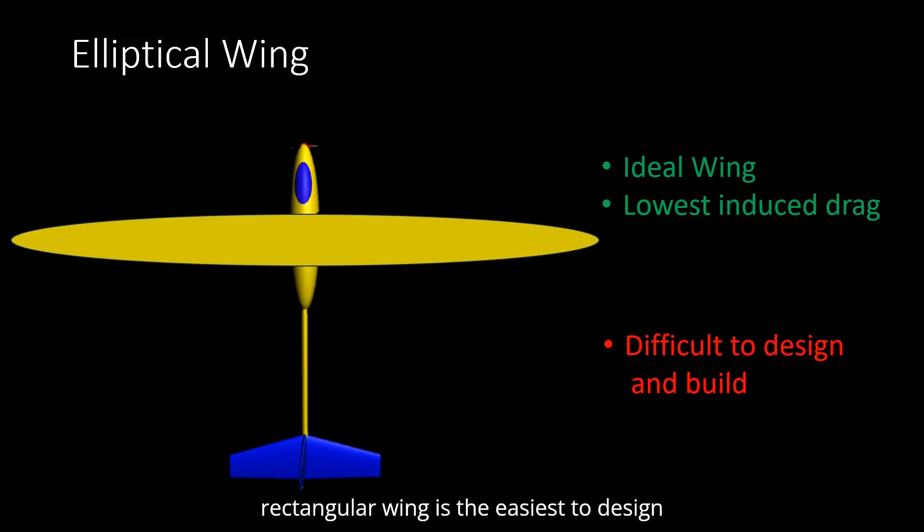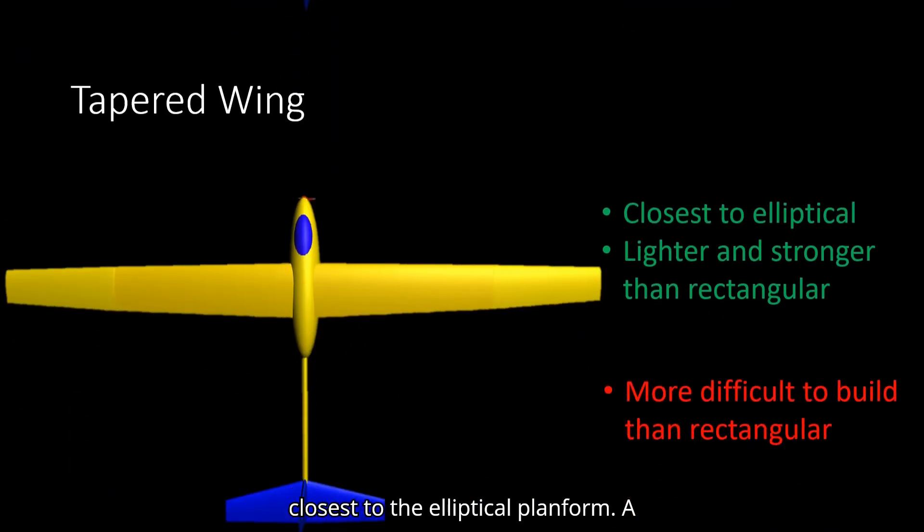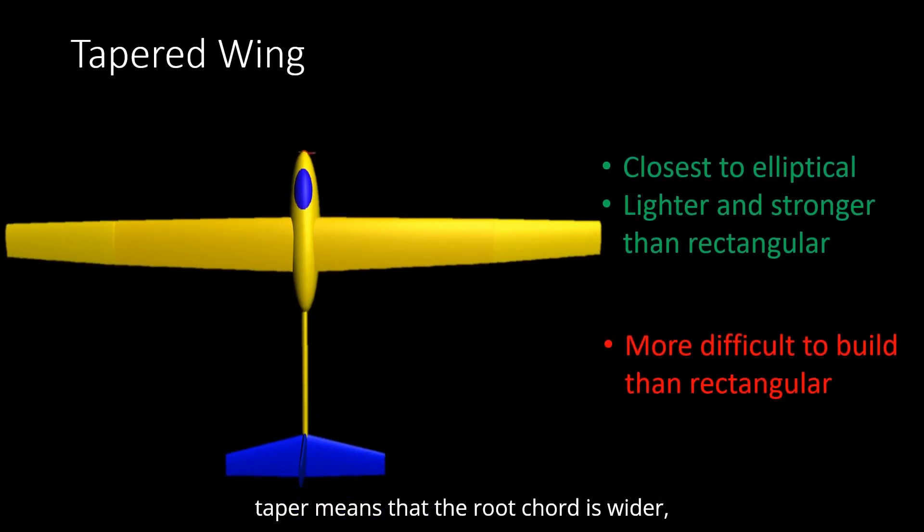The rectangular wing is the easiest to design and build, but it is less efficient. For a rectangular wing, the center of lift is farther out from the fuselage reference line. This means there will be a higher bending moment. The tapered wing comes closest to the elliptical planform. A taper means that the root cord is wider, and thus the wing can be made lighter and stronger than a rectangular wing.